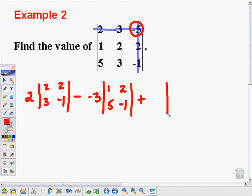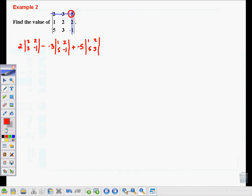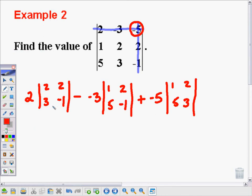So I move over one more with that column that I crossed out. And the submatrix I'm left with is 1, 2, 5, 3. And I put the negative 5 as a multiplier out in front. Now, let's carry this the rest of the way out. This will become 2 times, 2 times negative 1 is negative 2, and 3 times 2 is 6, so minus 6. So I just did 2 times negative 1 minus 3 times 2.